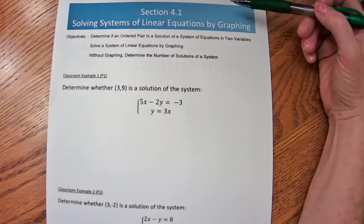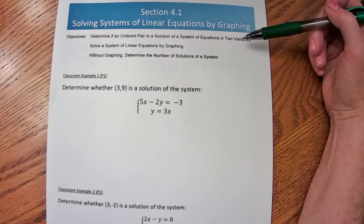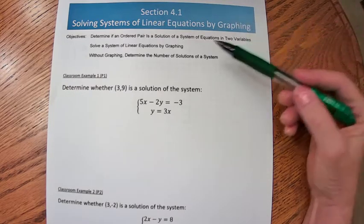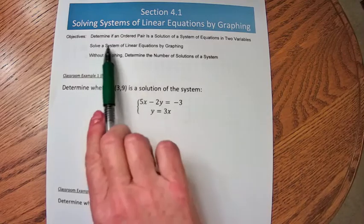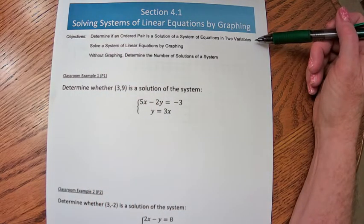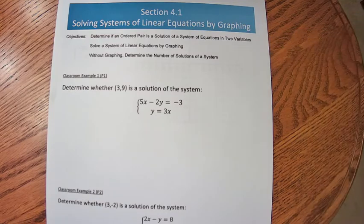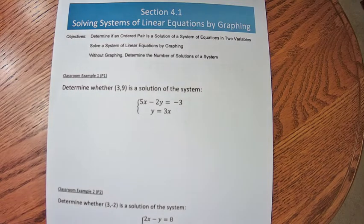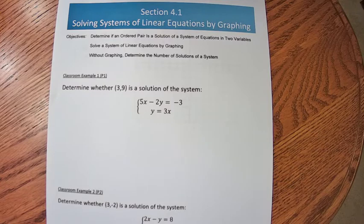In Chapter 4, Section 1, we'll talk about solving systems of linear equations. First, we'll determine if an ordered pair is a solution to a system of linear equations using two variables. Then we'll solve a system of linear equations using graphing, and also without graphing, we'll know how many solutions there are to a system.